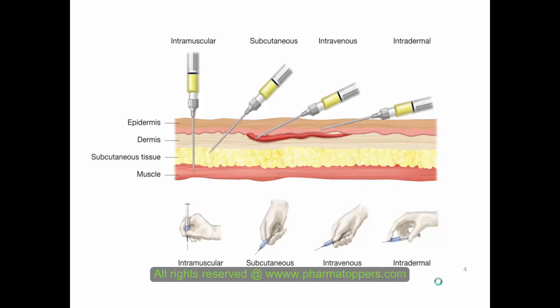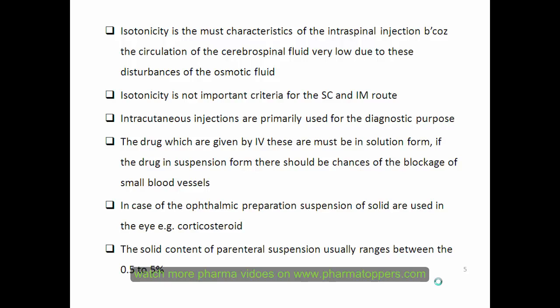Here is a pictorial diagram showing intramuscular, subcutaneous, intravenous, and intradermal injection sites. For intramuscular injection, it can be given to the deltoid muscle and gluteal muscle — these are the two common injection sites. For intravenous, it is given at the medial basilic vein. For subcutaneous and intradermal, the intradermal is also called a diagnostic injection.